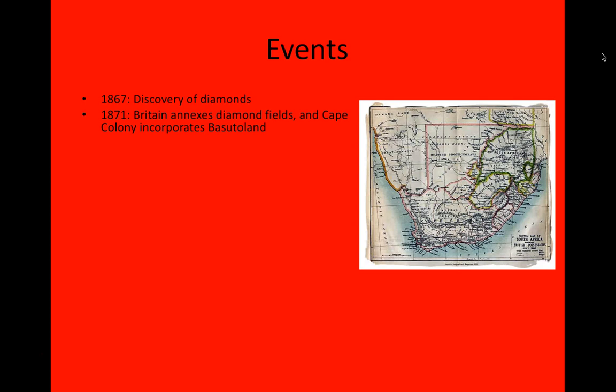This angered the Afrikaners and upset others who had claimed that land. The Tswana people, the Griqua, and others all had a stake in that area. The British simply annexed it. Moreover, in 1871, this was also the time when Cape Colony incorporated Basutoland, which had been an independent colony before that time. This would be a short-lived experiment, before it became untenable and Basutoland was returned to its independent status as a separate colony.